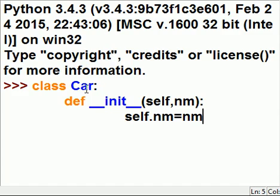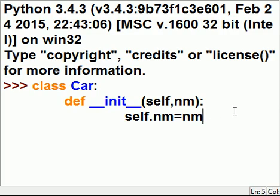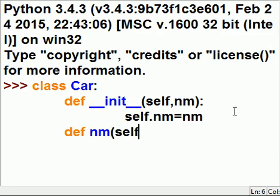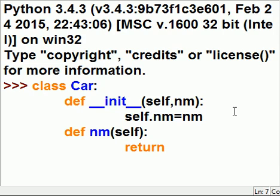So any other methods I define within the class Car will be able to access this variable. Now I'm going to define another method — it'll be an instance method. I'm going to pass self, and I'm just going to return that variable from above, which I can now reference as self.name.